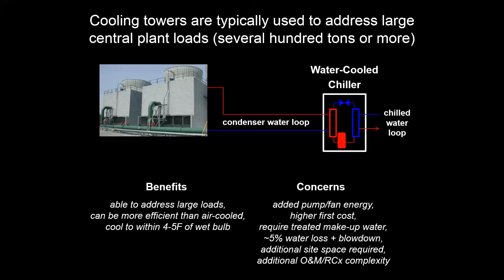You can address large loads when you're using a cooling tower. It can be more efficient than just an air-cooled chiller, and you can have a little bit more control as far as what loads you're able to get rid of — what the capacity is of that chill water system at the same ambient wet bulb and dry bulb conditions. Some drawbacks include added pump and fan energy, and a higher first cost for the extra infrastructure, as well as more treatment needed.